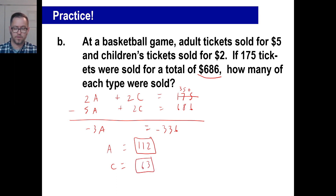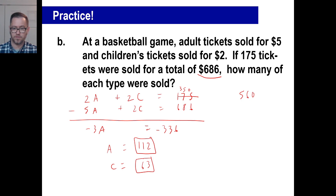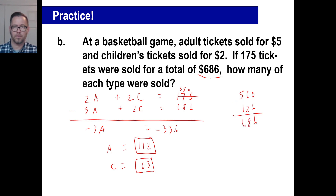If we wanted to check: 112 times 5 is $560, and 63 times 2 is $126. Add those together and you get $686. Bingo — there you go. See you guys next time, take care.